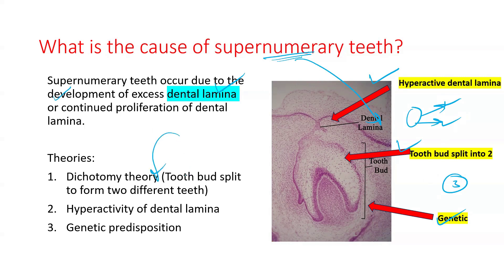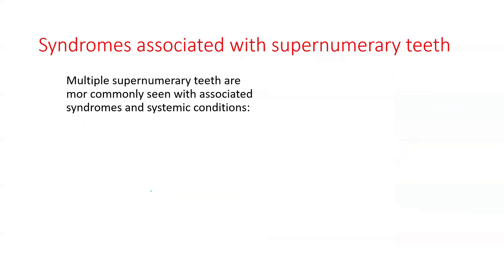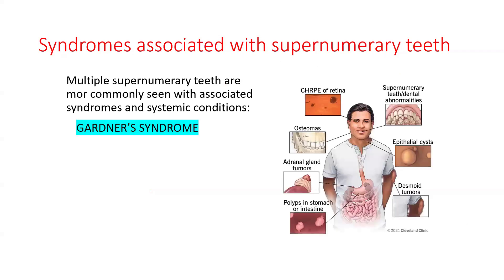The theories are the dichotomy theory, where a tooth bud splits to form two different teeth; hyperactivity of the dental lamina; and genetic predisposition. You must know that if more than one supernumerary tooth is present in the arch, it is usually associated with a syndrome.